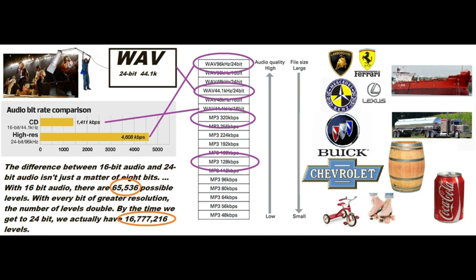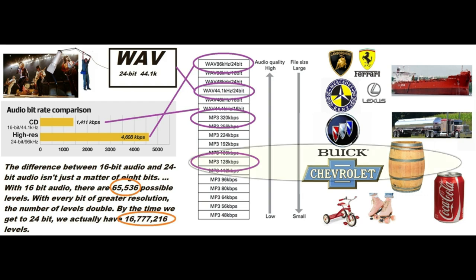Here is an easy-to-understand analogy which best summarizes the audio formats we have covered. Low-resolution MP3 is like a tricycle or roller skates and is about a soda can of data. MP3-128 is about the minimum you would use for music — it is like a Chevrolet and is about a barrel full of data. MP3-320 is much better, can be used for quality music, and is likened to a Buick — almost a Mercedes-Benz — and is about a tanker truck of data.